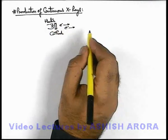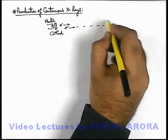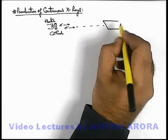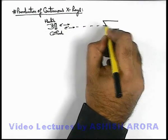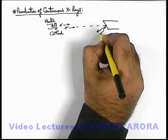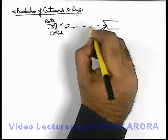thermionic emission from the cathode, and because of high potential difference when these electrons reach the anode, x-rays are emitted from the anode when these electrons collide.